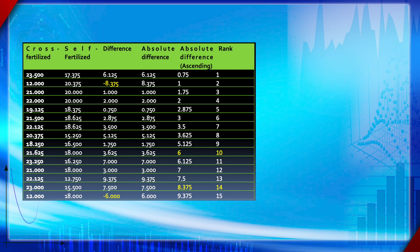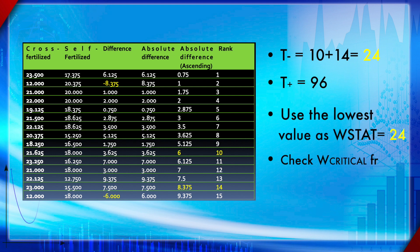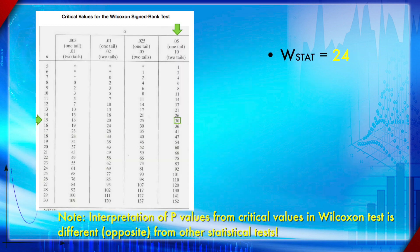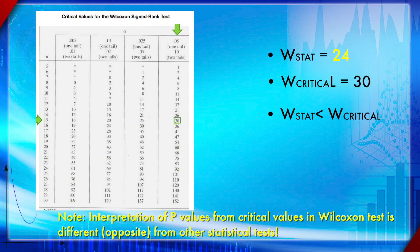The final step: sum the ranks from positive difference values as T-positive, and sum ranks from negative difference values as T-negative. T-negative = 24 and T-positive = 96. Take the lowest value — same logic as the Mann-Whitney U test — so T = 24. Compare against the critical value from the table, which is 30. Since the table value (30) is higher than the obtained value (24), the p-value is less than 0.05 — the result is significant.